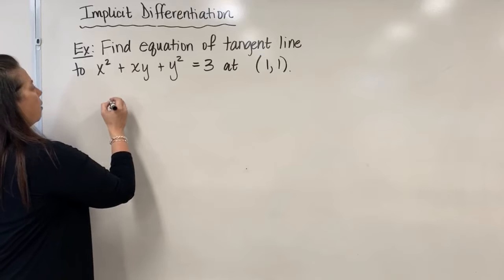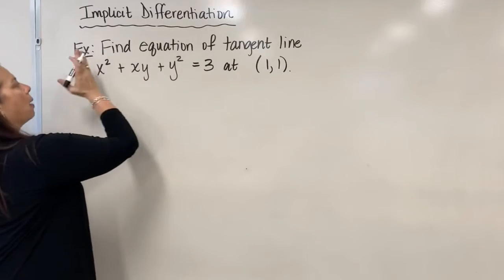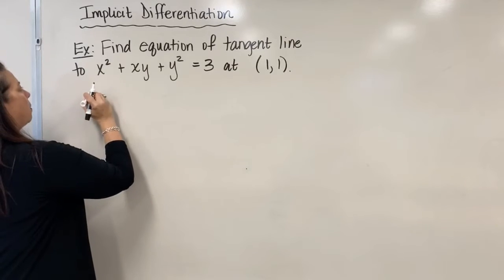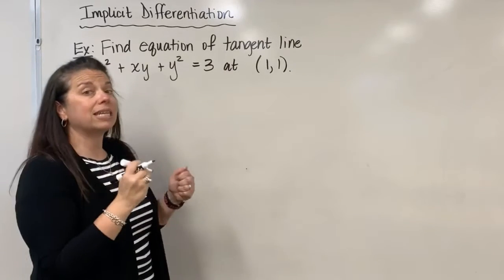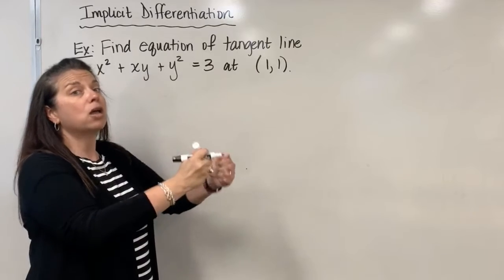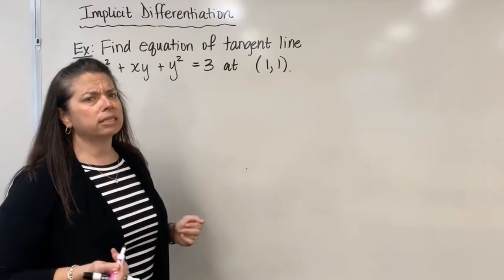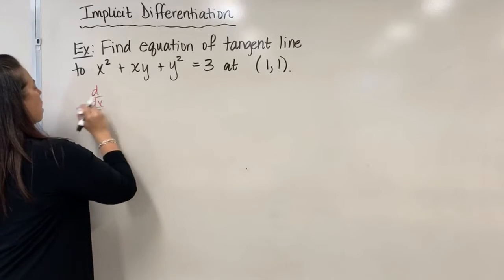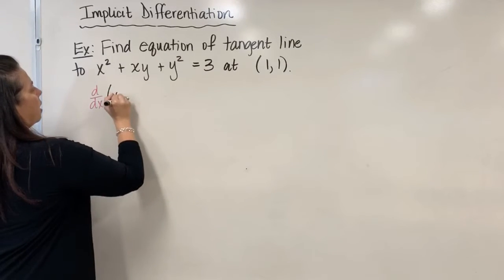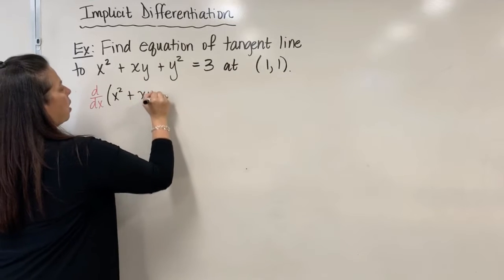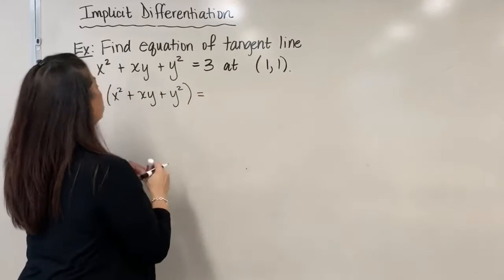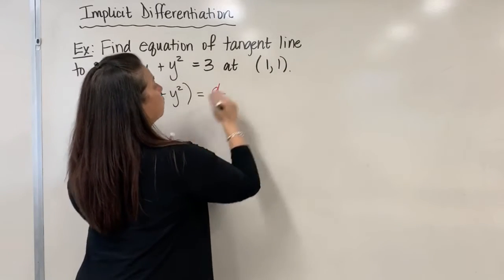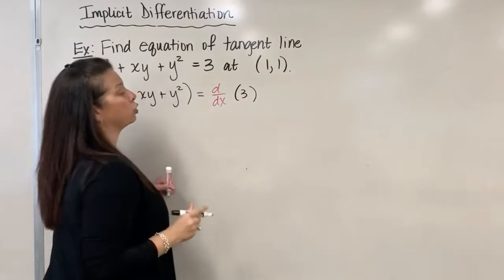I have an equation that I'm going to take the derivative separately of both sides. I'm going to take the derivative of y with respect to x. So I have d/dx of the whole left side: x squared plus xy plus y squared, and that will be equal to d/dx of the right side, which is just three.